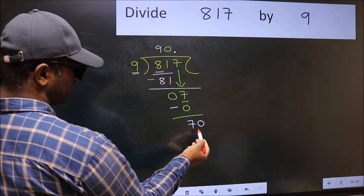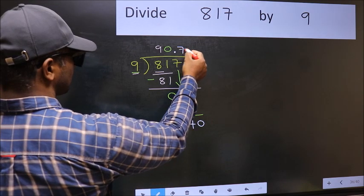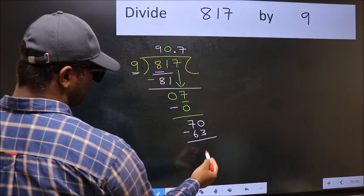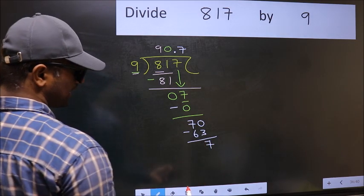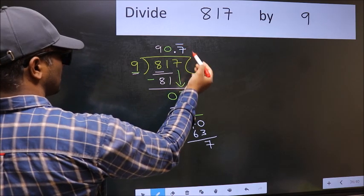So 70. A number close to 70 in 9 table is 9 times 7, 63. Now you should subtract. We get 7. We got 7 again. That means we get bar on this number. So this is our quotient.